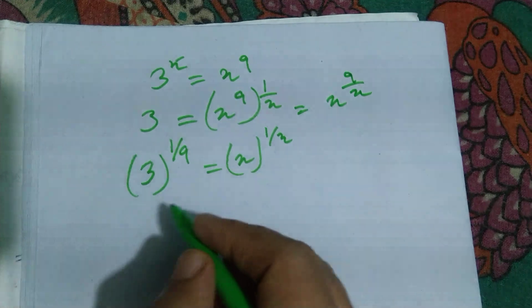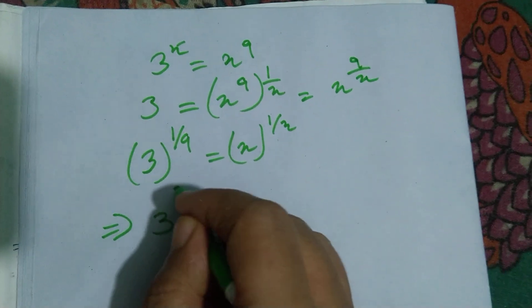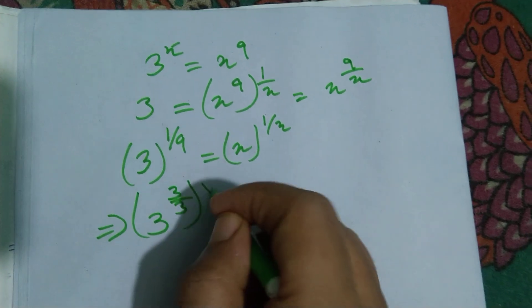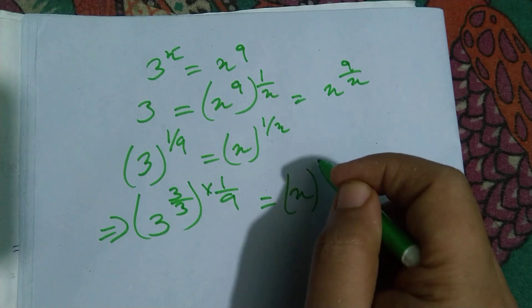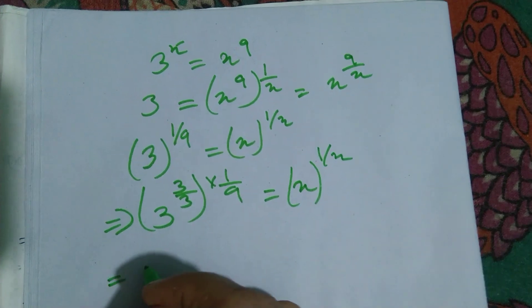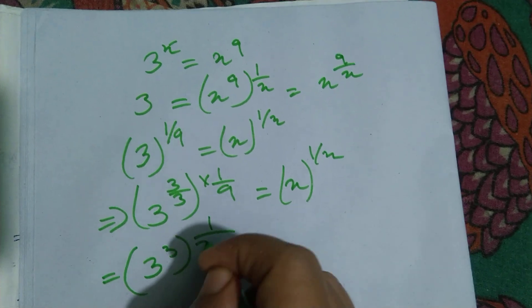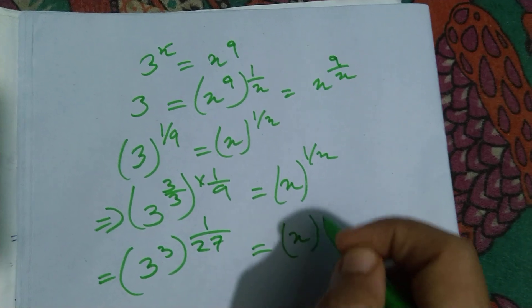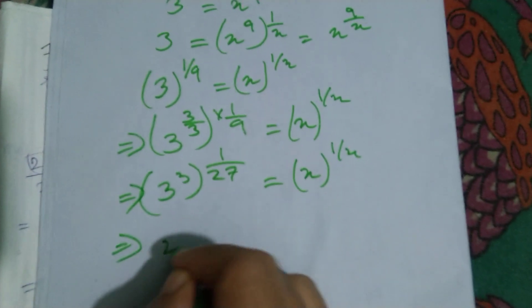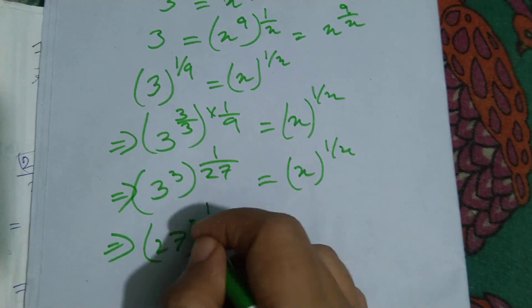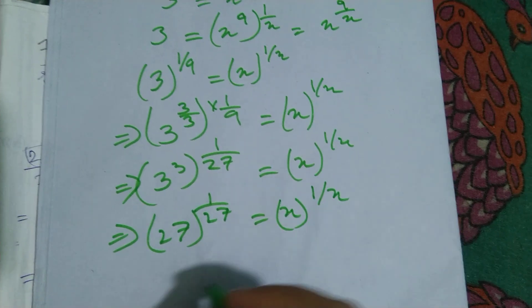So 3 to the power 1 by 9 can be written as 3 — and 3 times 1 by 9 equals x to the power 1 by x. Then 3 cubed times 1 by 27 equals x to the power 1 by x, which gives us 27 to the power 1 by 27 is equal to x to the power 1 by x.